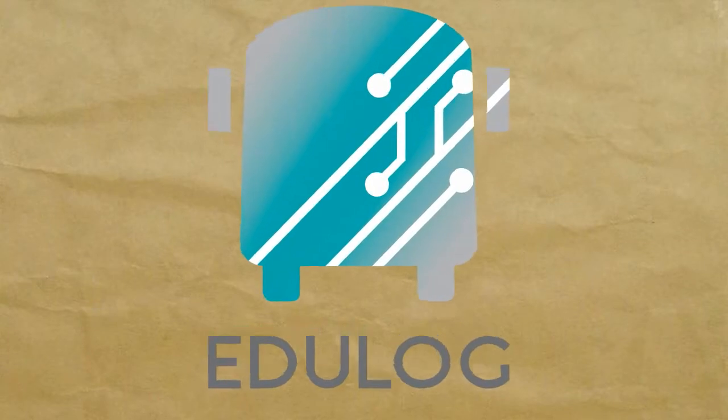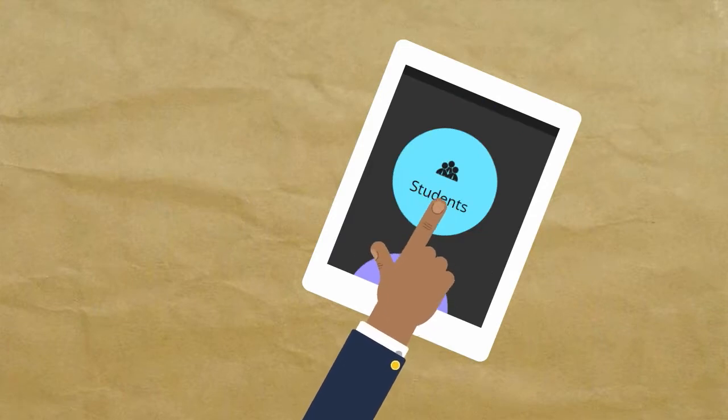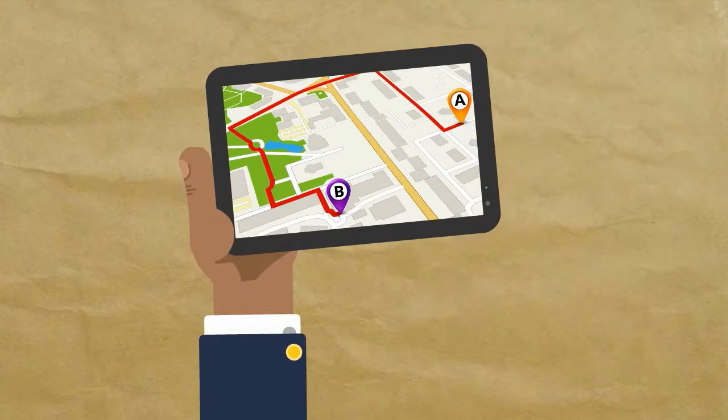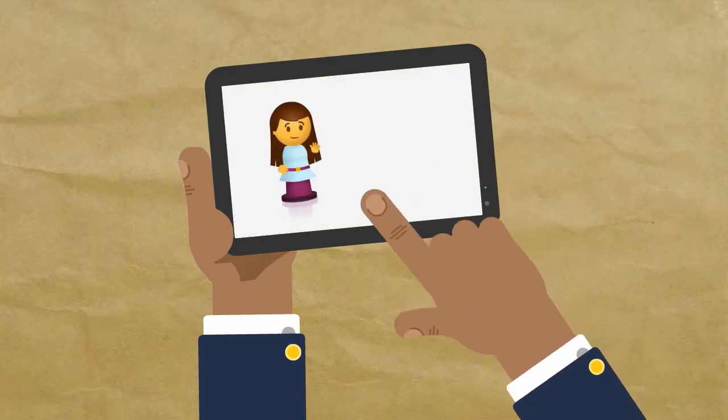Our driver portal allows drivers to punch the clock and manage student loads through an intuitive touch interface. The parent portal utilizes our in-depth student ridership platform to provide accurate school bus ETA, student drop-off confirmation, and lets parents assign their child to a bus stop from any computer or smartphone.